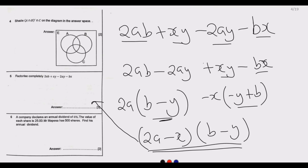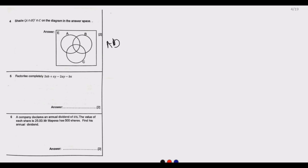Let us look at question number 6. A company declares an annual dividend of 6%. The value of each share is 25 kwacha. Mr. Mapesa has 500 shares — find his annual dividend. To find the annual dividend, we multiply the number of shares by the price per share, then multiply by the dividend percentage.